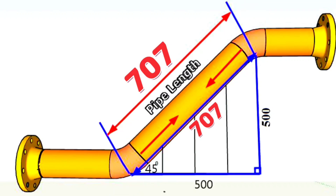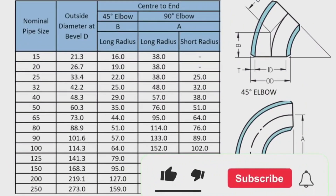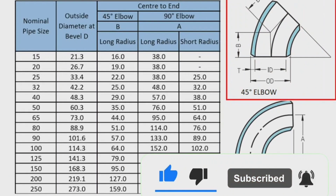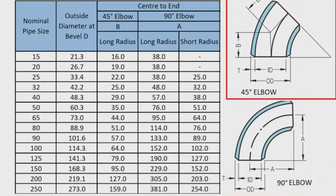Let's look at the standard size chart of elbows. This table shows the dimensions of the most commonly used 45-degree and 90-degree elbows in pipe fabrication. In this table, you can easily find the dimensions of 45-degree and 90-degree long radius and short radius elbows. Elbow size refers to the distance from the center of the elbow to the end of one side. From the pipe elbow dimensions chart, we find that the length of a 4-inch center-to-end 45-degree long radius elbow is 64 mm.